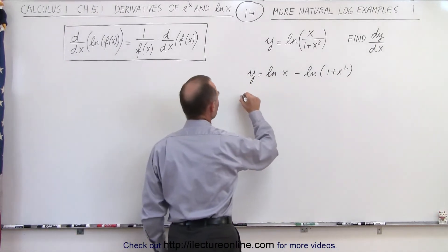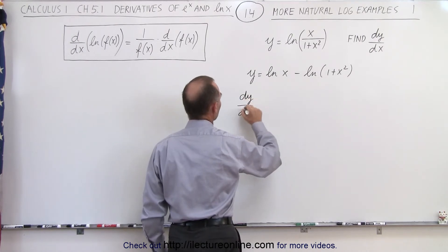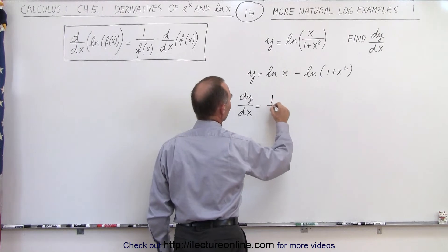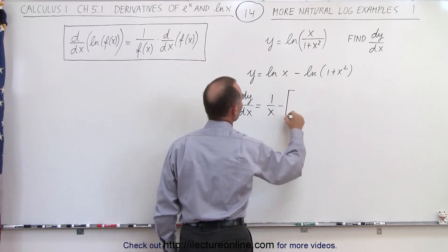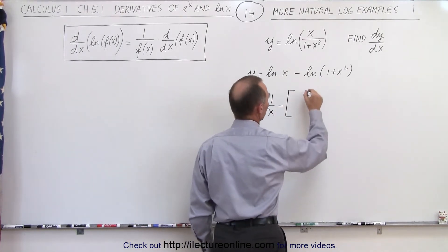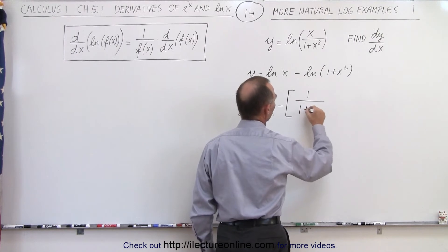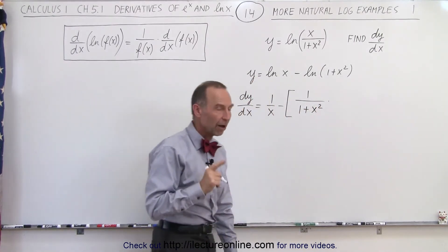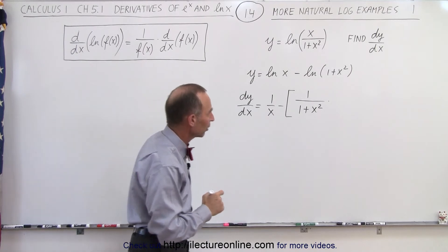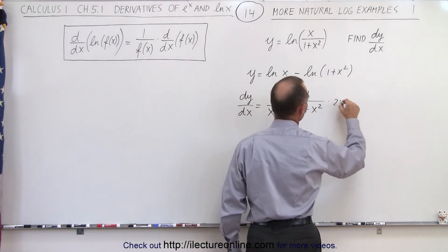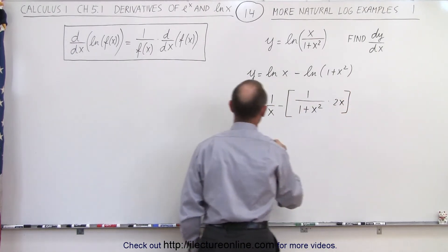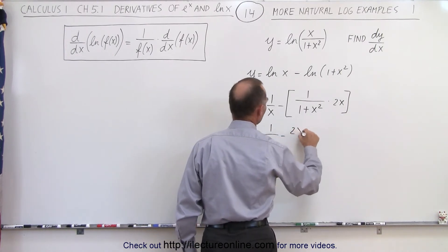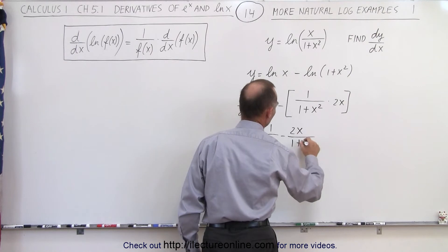So let's go ahead and do that. dy/dx is equal to the derivative of the first one, which is simply 1 over x, minus the derivative of the second one, which is 1 over 1 plus x squared times the derivative of that denominator, which in this case would be 2x. This can now be simplified as 1 divided by x minus 2x over 1 plus x squared.